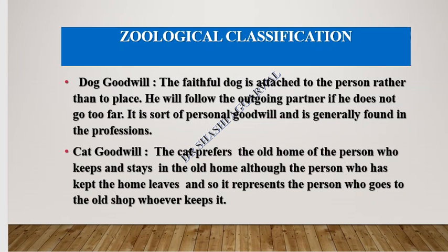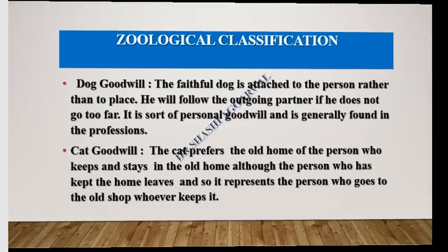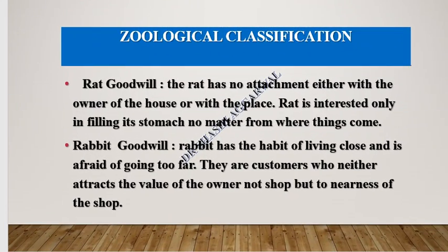In cat goodwill, if a firm ABC leaves and is replaced by XYZ at the same old location, the customers will continue to buy from that place and visit that shop because they are attached to the location. In rat goodwill, the rat has no attachment — neither to the owner of the house nor to the place. The rat customer is only price-driven. They can buy from anywhere and will purchase wherever they get the best price.